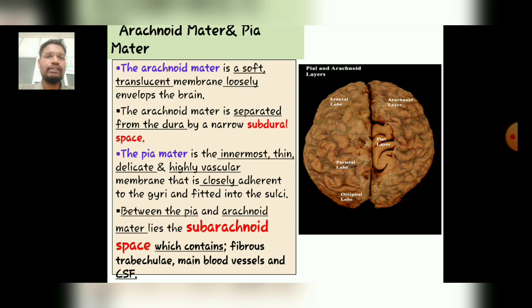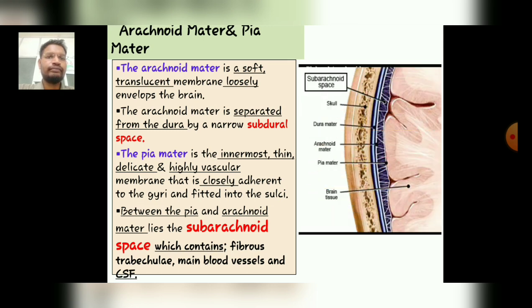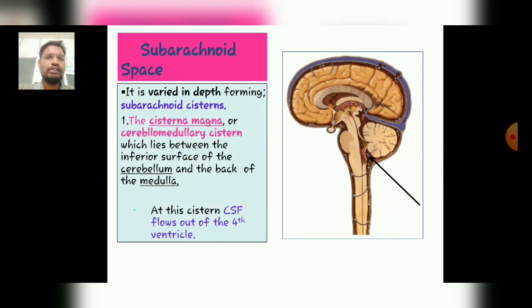The Arachnoid Matter is well represented in the given diagram, along with the Pia and arachnoid layers of the cerebral hemisphere. This diagram also represents the subarachnoid space where the CSF drains, and the layering of the skull. Continuing our topic with the subarachnoid space.